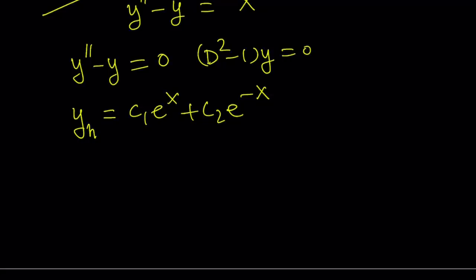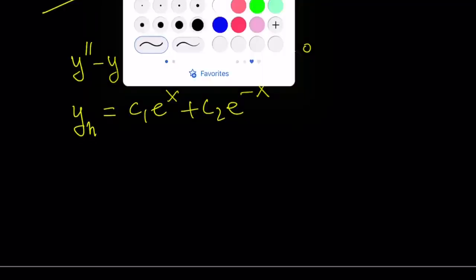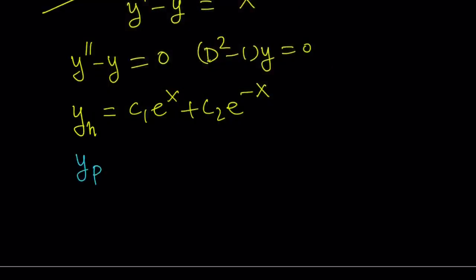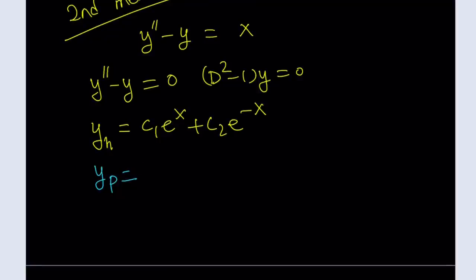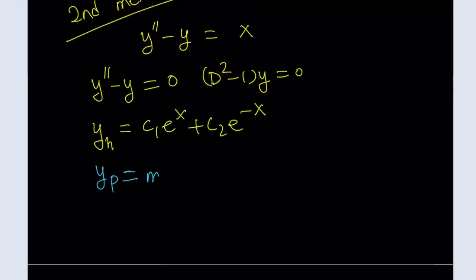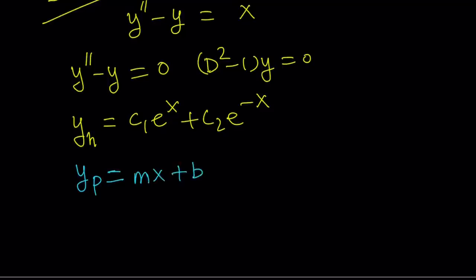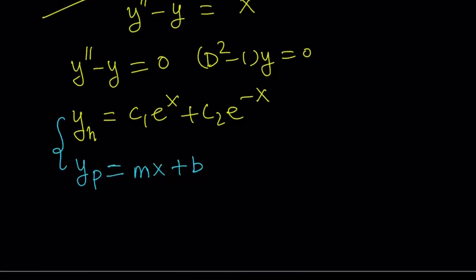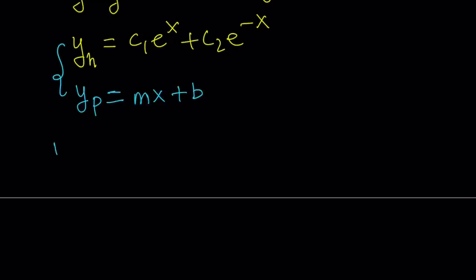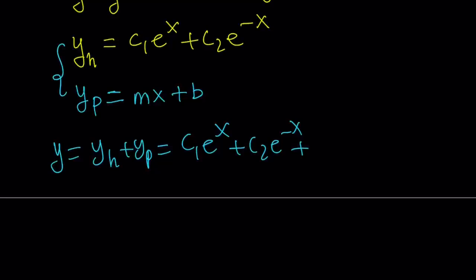But this equation is non-homogeneous — we have an x on the right-hand side — so we need to find a particular solution. Since we have an x on the right-hand side, I'm going to assume the particular solution is a linear function and write it as mx plus b. Then I'll add the particular solution to the homogeneous solution to get the general solution: y equals c1 e to the power x plus c2 e to the power negative x plus mx plus b.